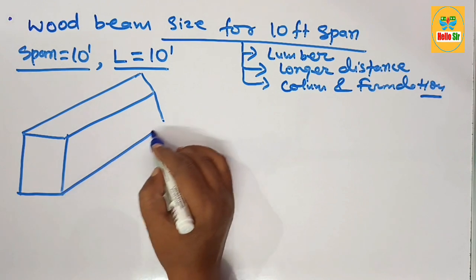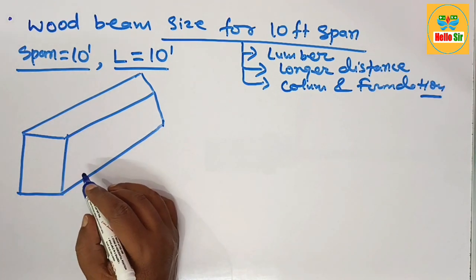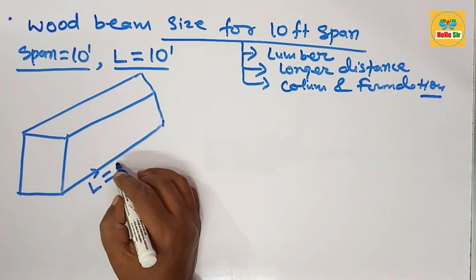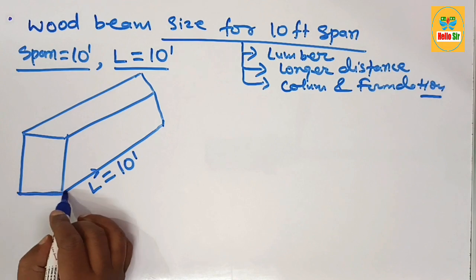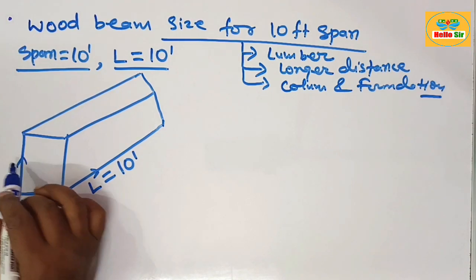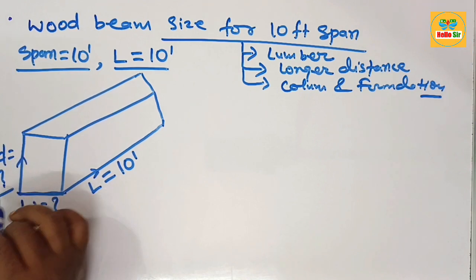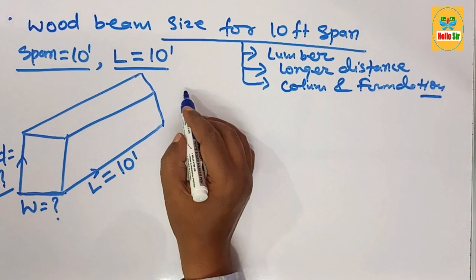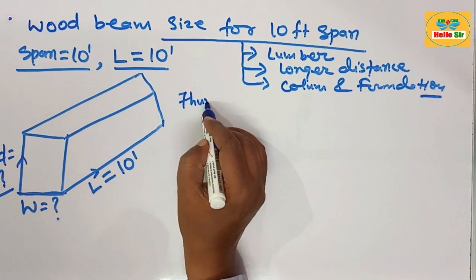This rough diagram helps us understand the length, width, and depth of the beam. The length of the wood beam is 10 foot. The width section and depth section of the beam are what we need to find. We calculate the wood beam size as per thumb rule.